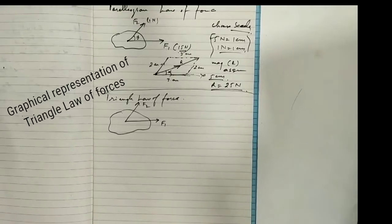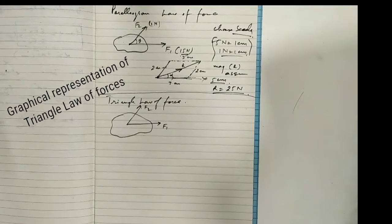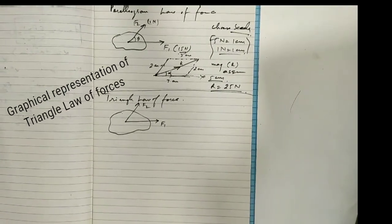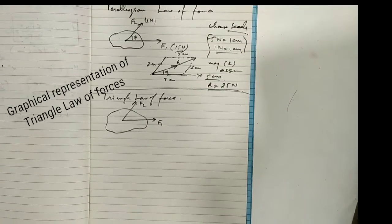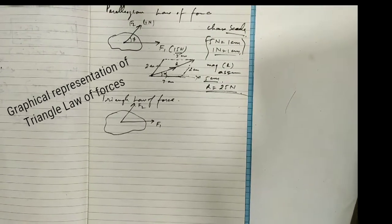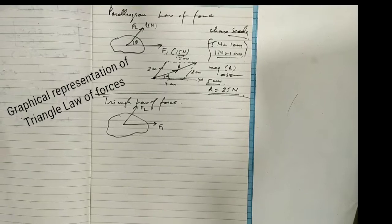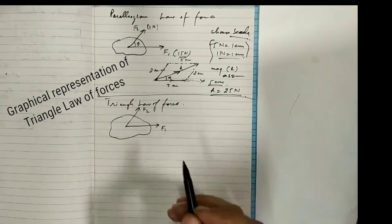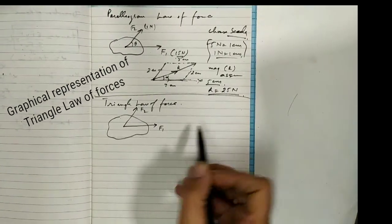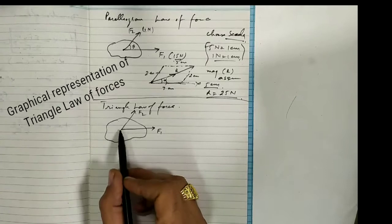The triangle law of forces states: if two concurrent forces are acting simultaneously on a body and are represented in magnitude and direction by the sides of a triangle taken in order — 'taken in order' means the end of one force is the beginning of the next.